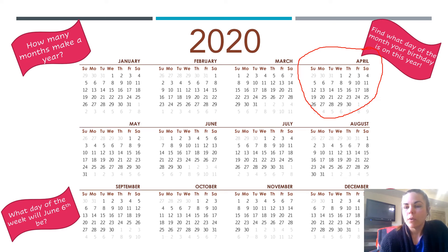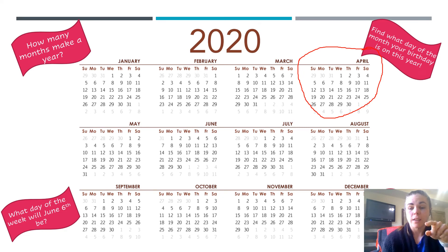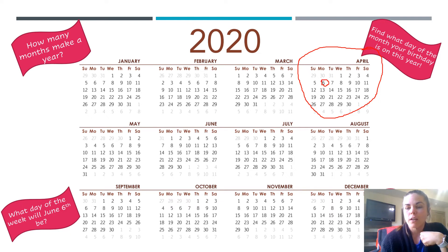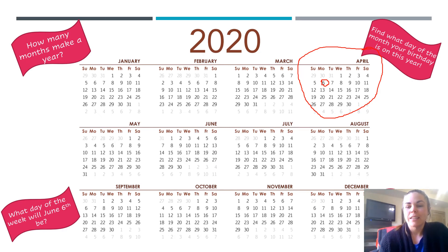Now I want you to find what day of the month your birthday is going to be on this year. Ms. Varnum's birthday is on April 6th. So if I wanted to see what day of the week my birthday falls on, I would go to April right here, then find where the number six is — and I can see that my birthday is going to fall on a Monday this year. April 6th is on a Monday. So take a few minutes and find what day your birthday is going to be on this year.